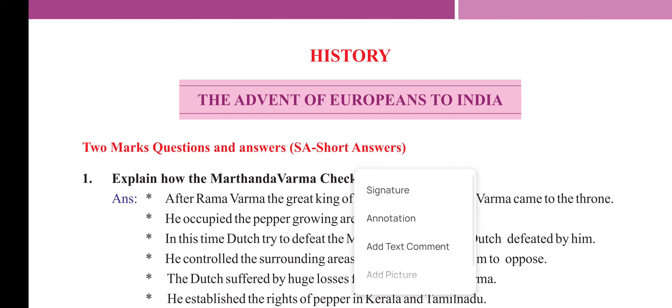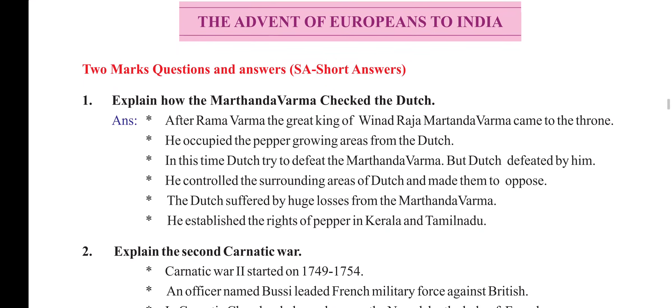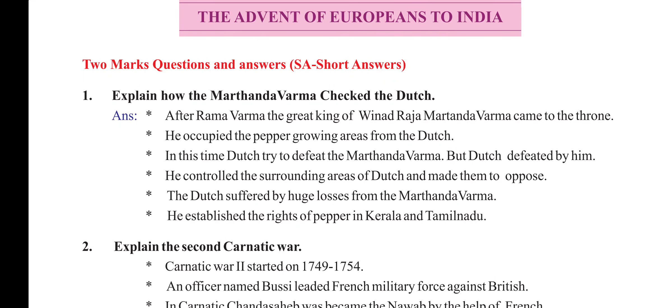In this chapter: explain how Martanda Verma checked the Dutch. After Rama Verma, the great king of Vyanada, Raja Martanda Verma came to the throne. He occupied the pepper-growing areas from the Dutch. The Dutch tried to defeat Martanda Verma but were defeated by him. He controlled the surrounding areas of the Dutch and made them to oppose. The Dutch suffered huge losses from Martanda Verma. He established the rights of pepper in Kerala and Tamil Nadu.